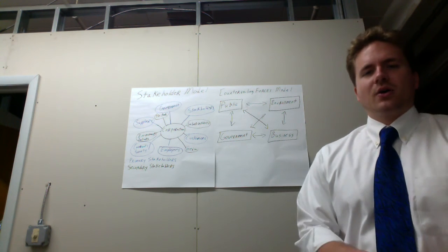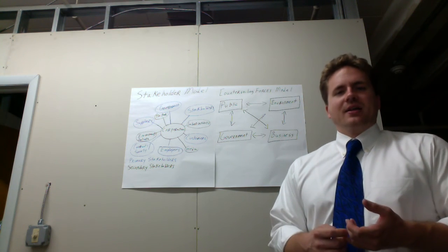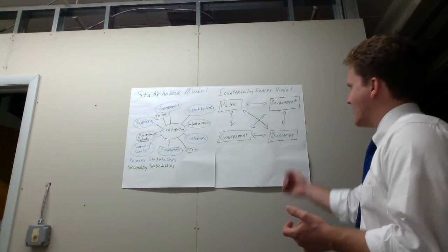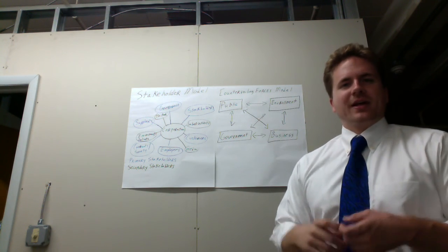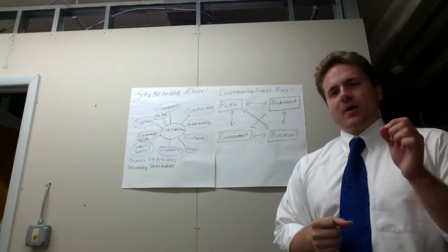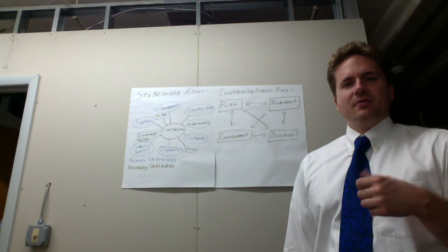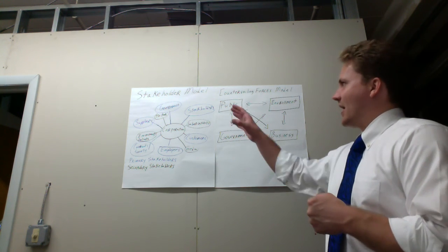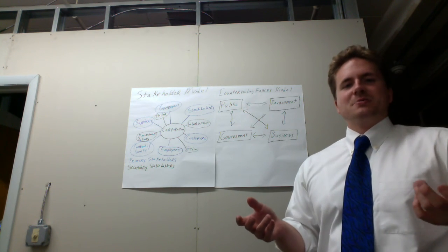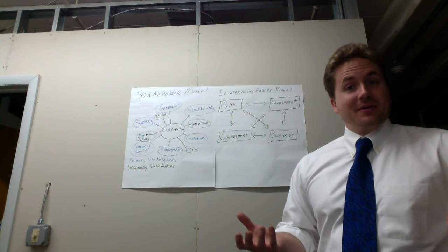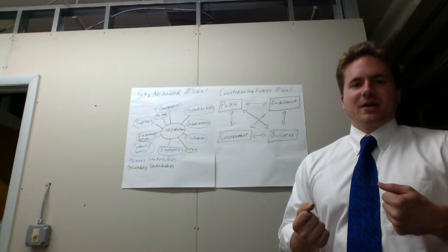Of course, one of the main criticisms of the stakeholder model is that how do you really define the stakeholder itself? And I would argue that the same can be allotted to the countervailing forces model. Well, who are these environmental, business, government, or public actors? It's not all that clear. And what I want you to remember is that it's all going to depend on where you're working. These are contextually defined, defined by the situation.